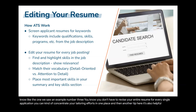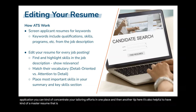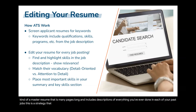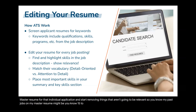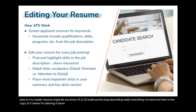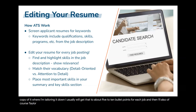A helpful strategy is to maintain a master resume that is many pages long and includes descriptions of everything you've ever done. When you find a job to apply for, make a copy of that master resume and start removing things that aren't relevant. For example, past jobs on the master resume might be 15–20 bullet points long, but in the tailored copy you'd bring that down to about 5–10 bullet points per job, and then tailor your summary and key skills section for that individual application.